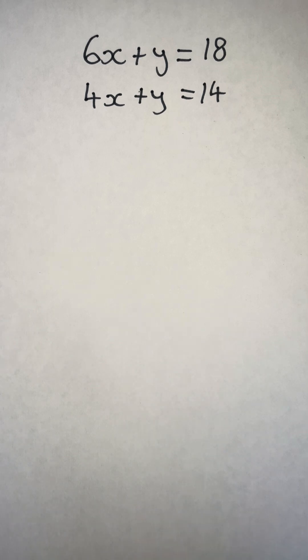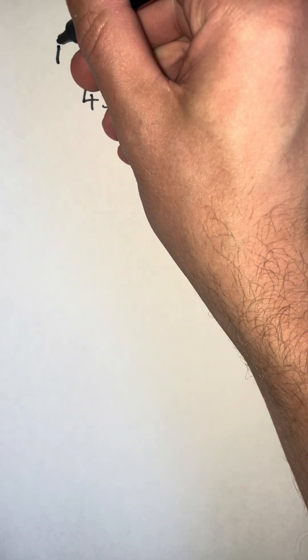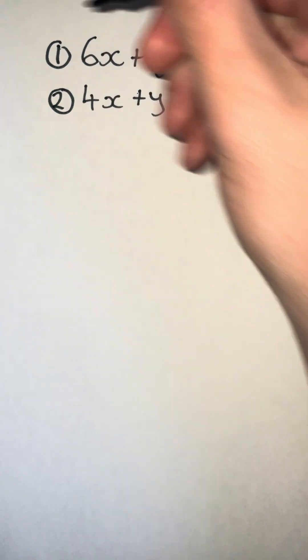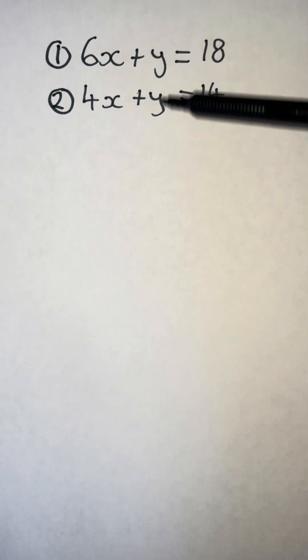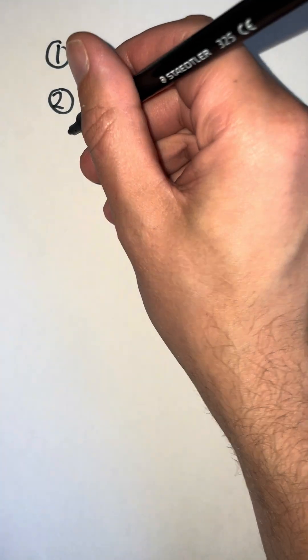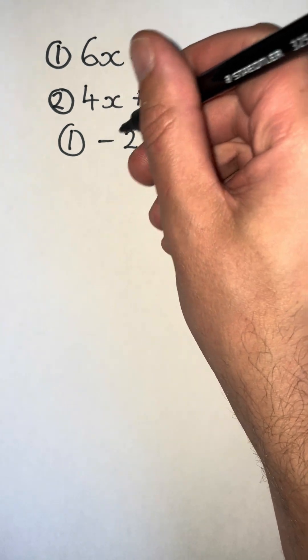To solve this pair of simultaneous equations, I'm first going to label my equations as equation 1 and equation 2. I see that I get a match in my y terms, so I'm going to do equation 1 subtract equation 2.